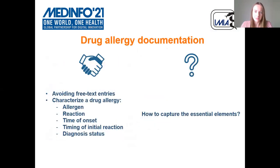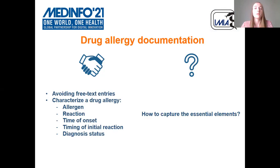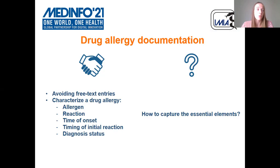Concerning drug allergy documentation, experts agree that we should avoid free-text entries as much as possible. There is also consensus on how to characterize a drug allergy. There are a few essential data elements: the allergen, which can be documented as a substance, a product, or a drug class; the reactions or symptoms the patient experienced; the timing of onset — was it an immediate or delayed reaction; the timing of initial reaction, so when did this happen; and diagnosis status — was this confirmed by tests, for example.